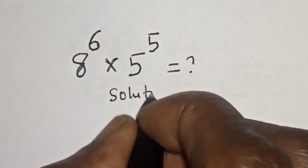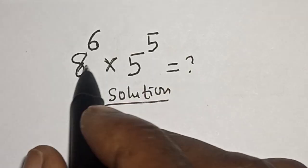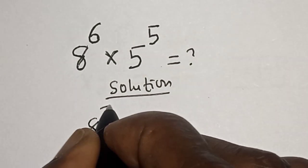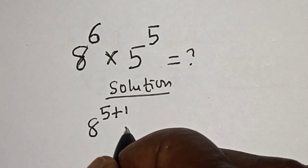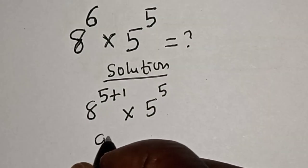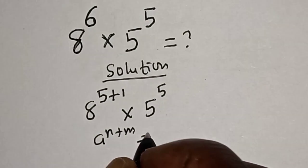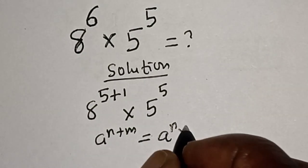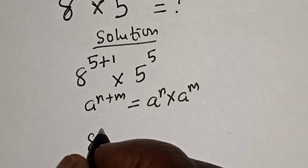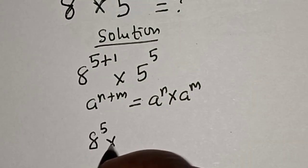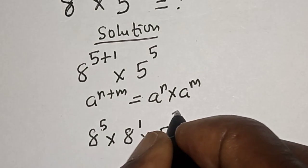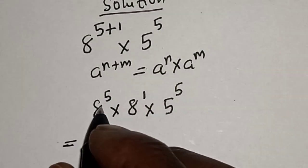Solution. This is 8 raised to power 6 and this is 5 raised to power 5. Then 8 raised to power 6 can be written as 8 raised to power 5 plus 1, multiplied by 5 raised to power 5. Now remember this rule: if you have a raised to power n plus m, this is equal to a raised to power n multiplied by a raised to power m.